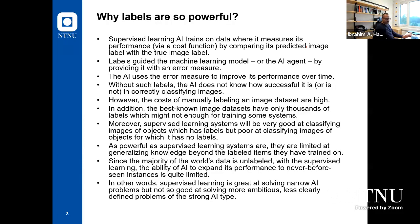In supervised learning, the AI trains on data where it measures performance using a cost function by comparing predicted labels with true labels. Labels guide the model by providing an error measure, and the AI uses this error to improve performance over time. Without such labels, the AI does not know how successful it is at classifying images, so without this loss function the model cannot understand if it's doing well or badly.